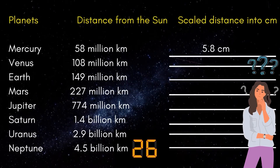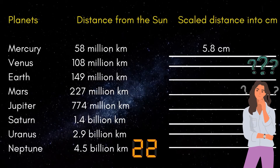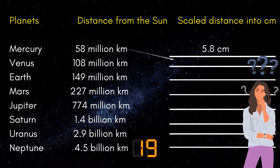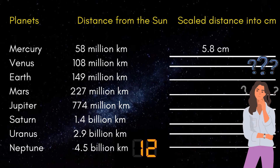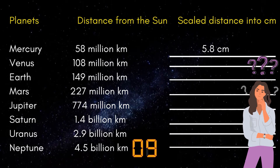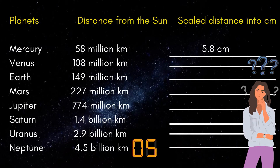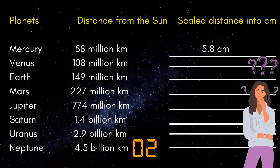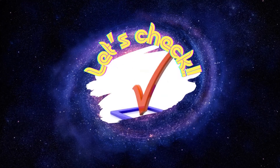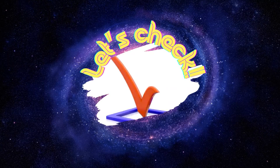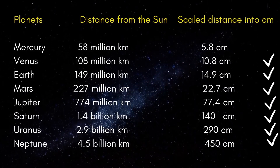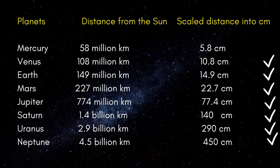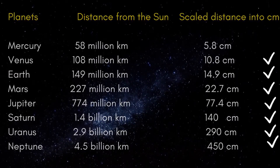I'll be giving you enough time to answer this. Good luck! Be guided by the formula: distance from the sun over 10 million kilometers times 1 centimeter. If you are done writing your answers, you are ready for checking. Here is our suggested answer — please be guided. Congratulations if you got the perfect score for Learning Task 1!